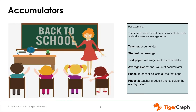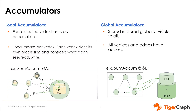This is essentially the behavior of an accumulator: first it collects the messages from vertices and edges, performs an operation on the collected values based on its type, and then stores the final value. There are two general categories for accumulators: local and global.